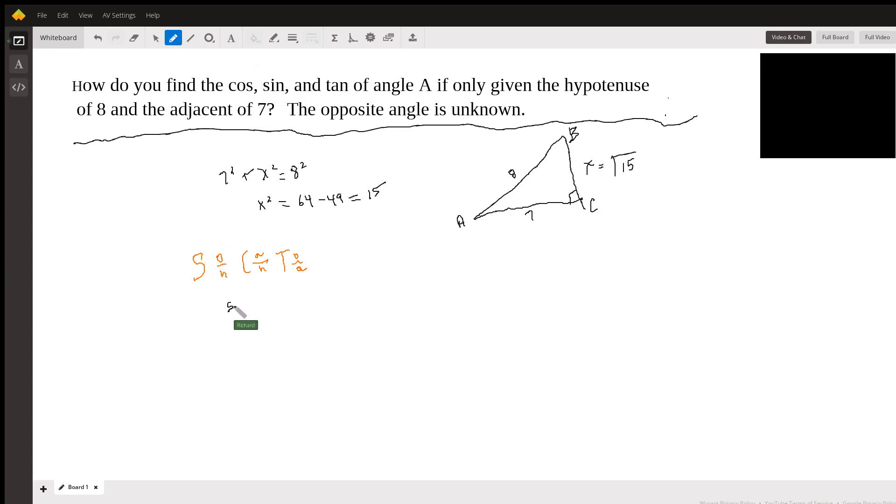So sine of angle A is opposite over hypotenuse. So it's going to be root 15 over 8. Cosine of angle A is adjacent over hypotenuse. So that's 7 over 8.